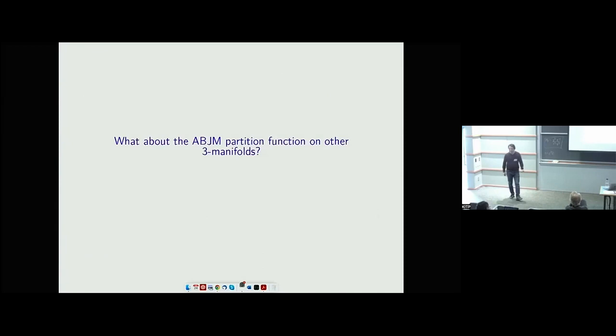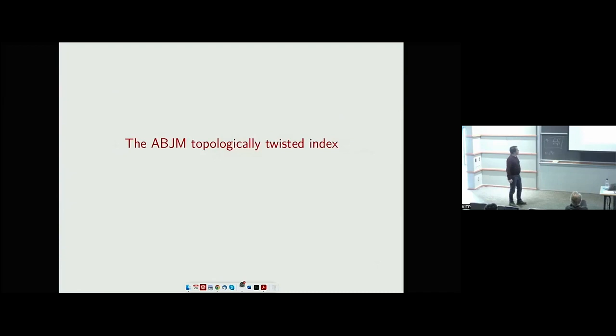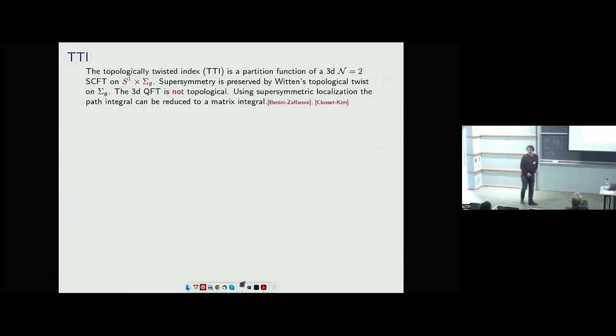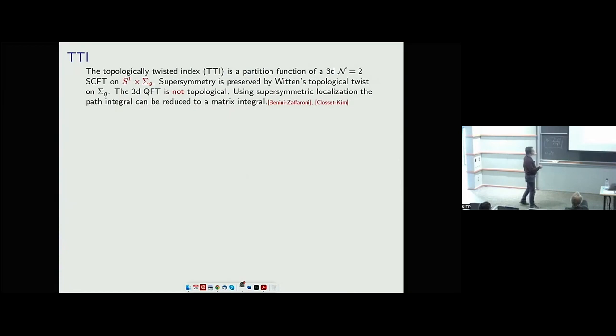Now I want to ask essentially the same question about some other interesting manifolds — this will be the rest of the talk. I'll focus on one example: the topologically twisted index. It's a partition function on the special manifold S¹ × Σ_g, where Σ_g is a smooth compact hyperbolic Riemann surface. What you do here is follow Witten — usually a good idea — and perform a twist on the Riemann surface with the U(1)_R symmetry of the theory. This applies for all N=2 CFTs.